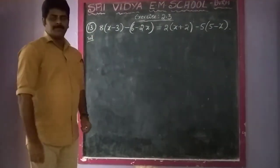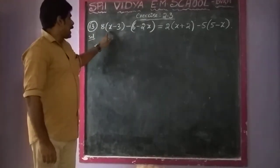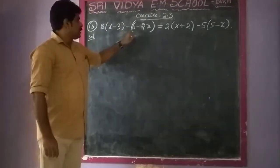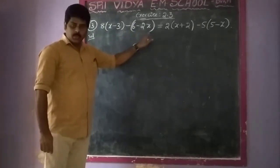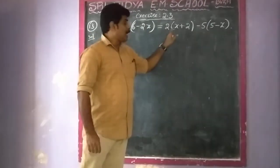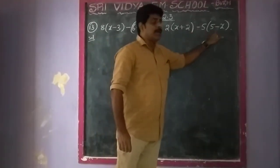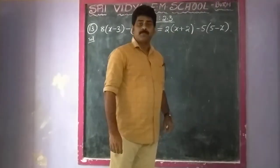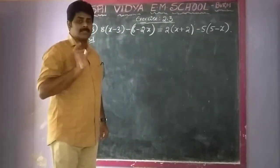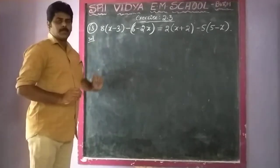Next, Sum 13. What is the 13th sum? 8 of (x minus 3) minus (6 minus 2x) is equal to 2 of (x plus 2) minus 5 of (5 minus x). Listen very carefully. Using distributive property.